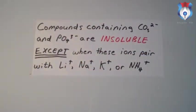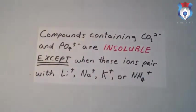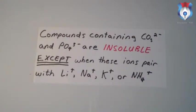The last rule: compounds containing carbonate and phosphate ions are insoluble, except when these ions pair with lithium ion, sodium ion, potassium ion, or ammonium ion. That covers the solubility rules. It's worth noting that the classification into soluble or insoluble is actually an oversimplification — solubility is really a continuum. Even many compounds classified as insoluble still dissolve in water to some extent, just not nearly as much as those termed soluble.